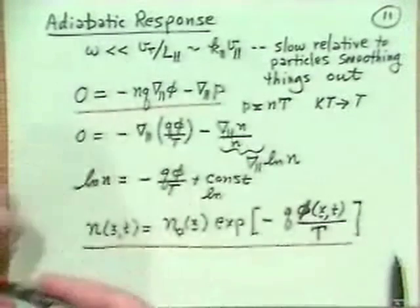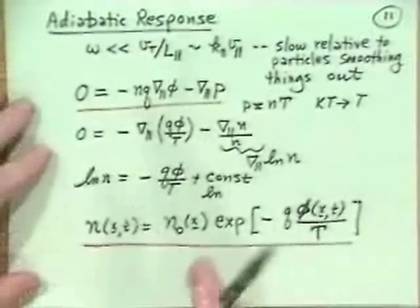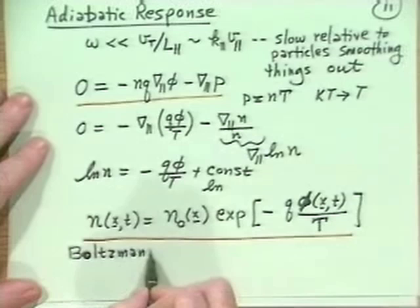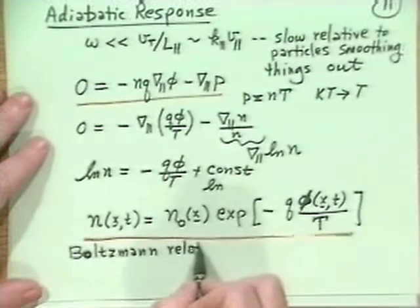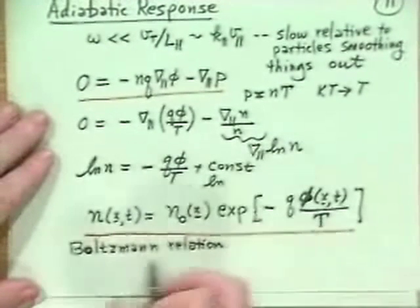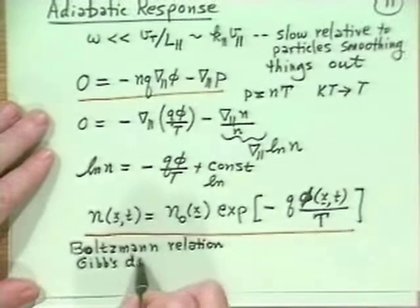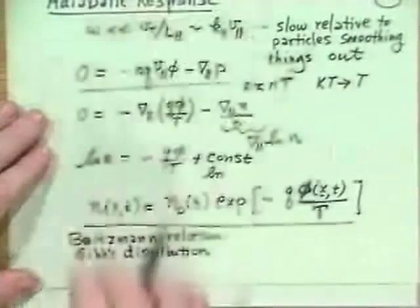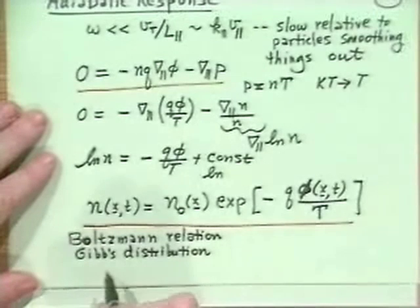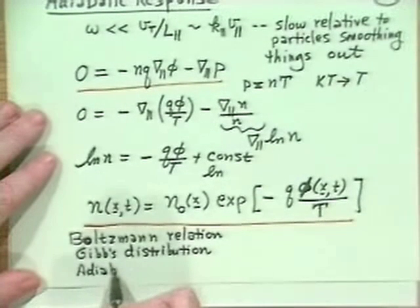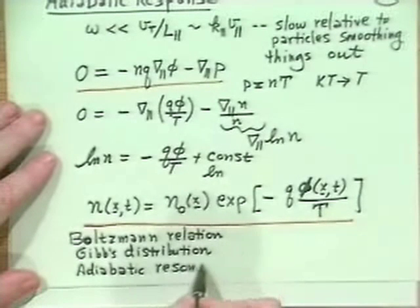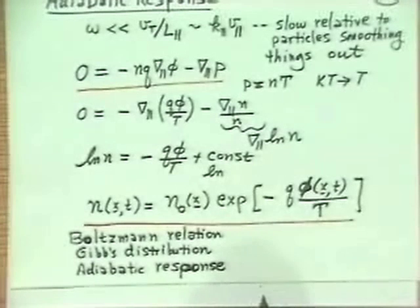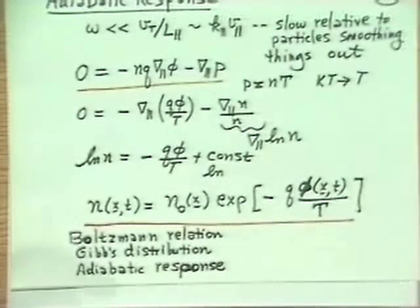This law — n equals n_0 exp(−qφ/T) — goes by several names in the field. It's often called the Boltzmann relation, sometimes the Gibbs distribution, or simply the adiabatic response. It can appear in this non-linear exact form or in various linearized approximate forms.